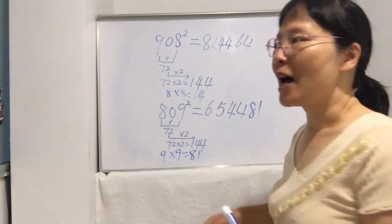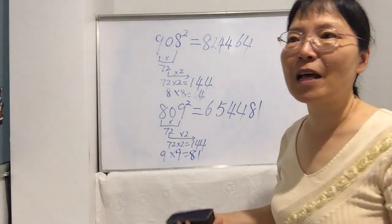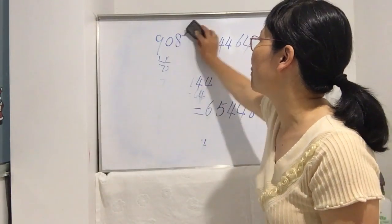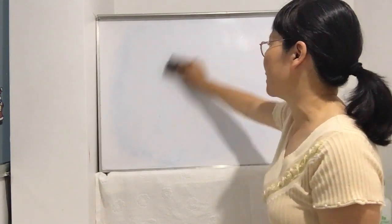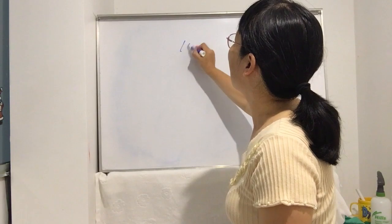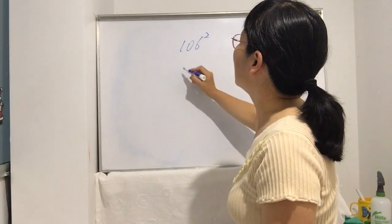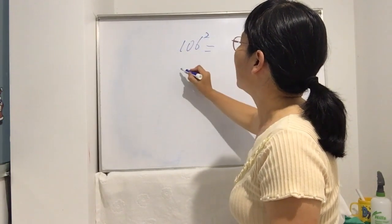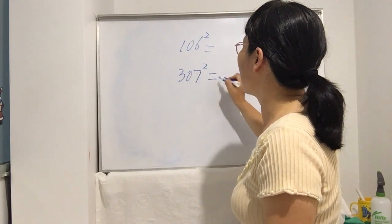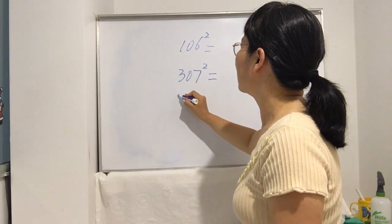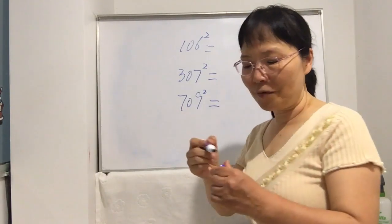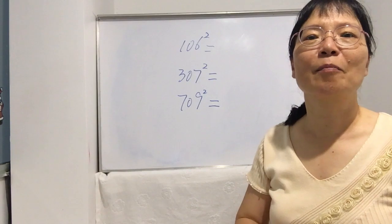I'll give you some exercises to practice. After you practice more, it will be very easy to master this special skill. Here are your homework problems: 307 squared and 709 squared. I will give you the answers next time.